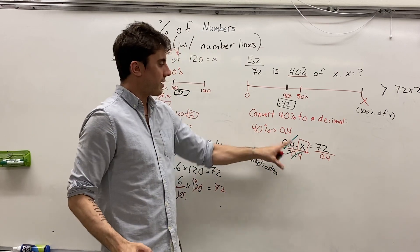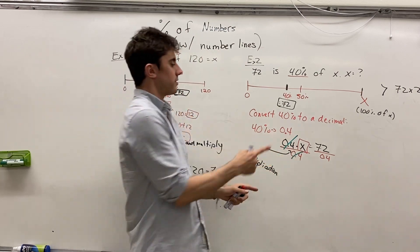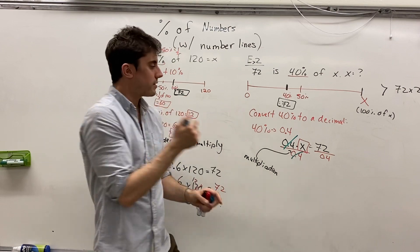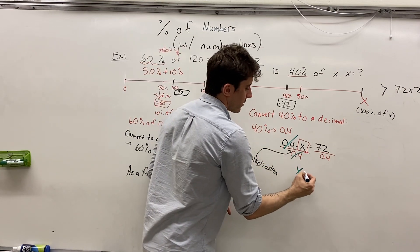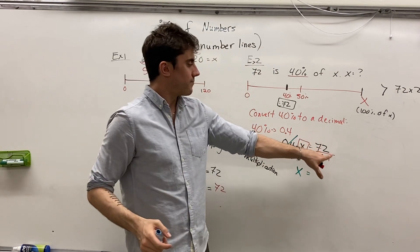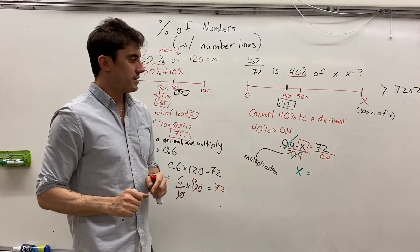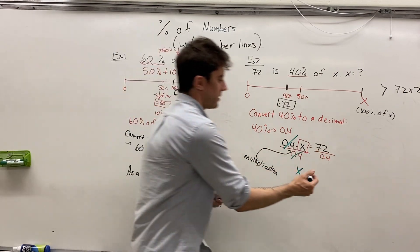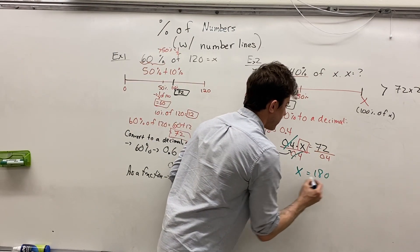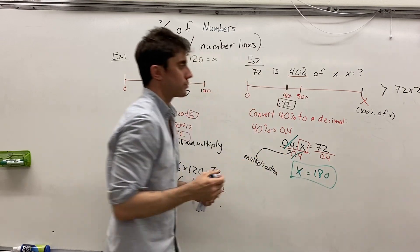That's going to make the 0.4s cancel out. Because x is being multiplied and divided by 0.4, the inverse operations cancel each other out. And so now we are left with x is equal to 72 divided by 0.4. And you can use a calculator if you like. But we get the value of x is equal to 180.